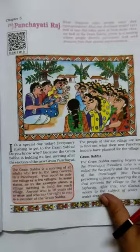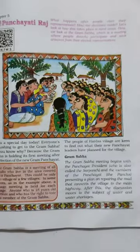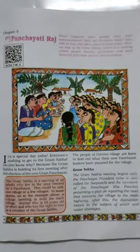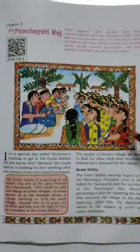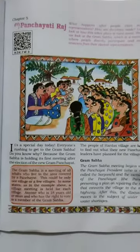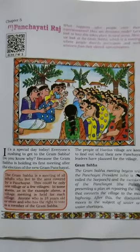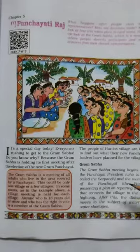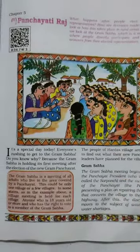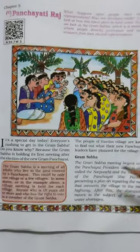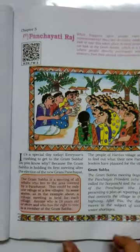ग्राम सभा क्या होती है? जब सारे villagers जो कि 18 साल या उससे ज़्यादा की उम्र के होते हैं, वो इकट्ठे होते हैं अपने गाँव की सारी problems को discuss करने के लिए, अपने पंचायत के साथ, और उनके क्या-क्या solutions जो हैं, वो वहाँ पे suggest होते हैं।